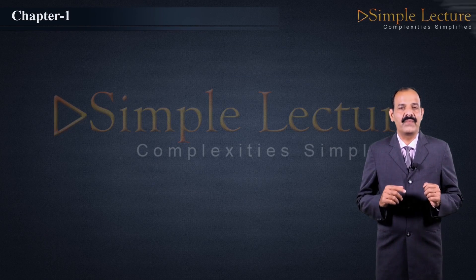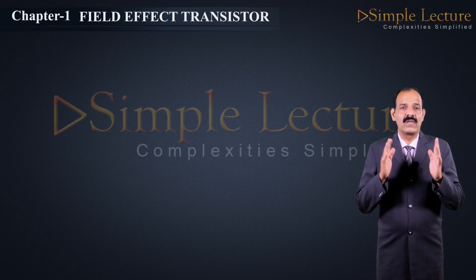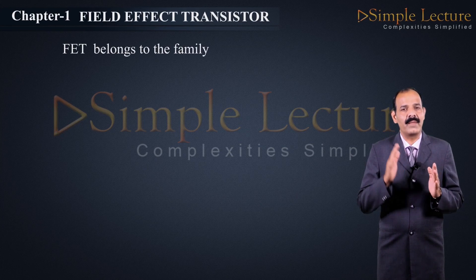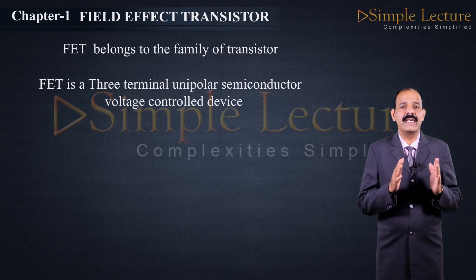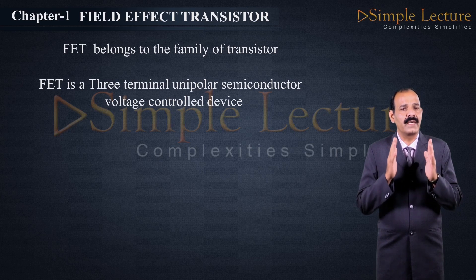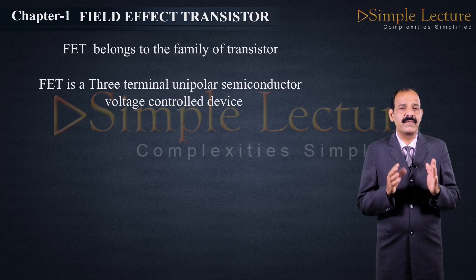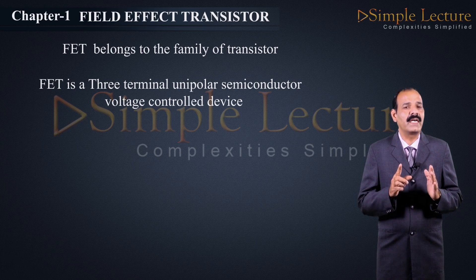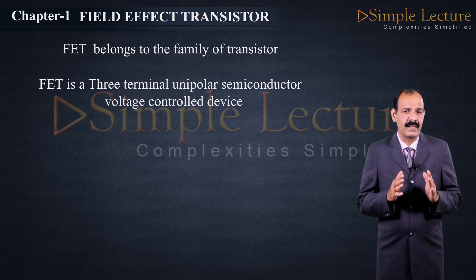Chapter number 1: Field Effect Transistor, also called FET. FET belongs to the family of transistors and is a three-terminal unipolar semiconductor voltage control device. In this device, the total current is due to only one type of majority charge carriers, hence it is a unipolar device.